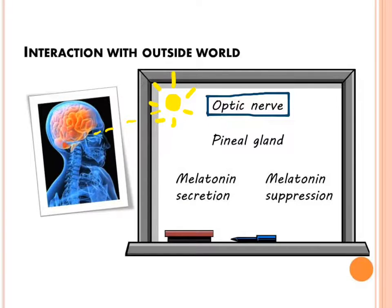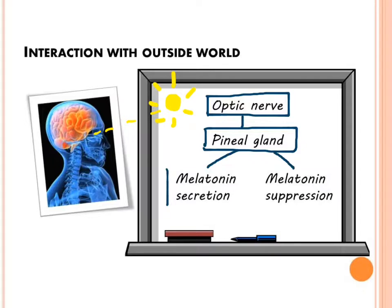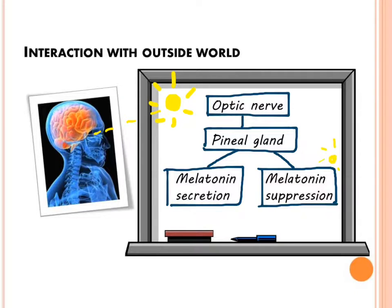The circadian rhythm can then be synchronised with the outside world's light and dark cycles, controlling and regulating the rhythm, such as the sleep-wake cycle. Light and dark cycles influence the release of melatonin from the pineal gland — in the absence of light, so at night, melatonin is released, and in light conditions, melatonin release is suppressed.